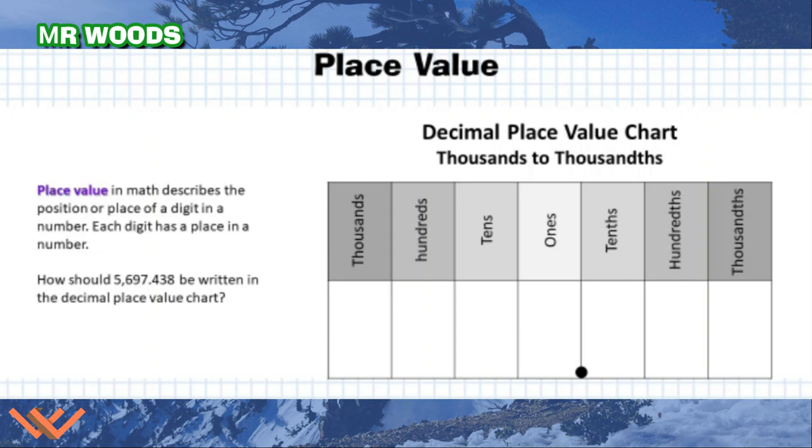Here we have place value. So place value in math describes the position or place of a digit in a number. It says here 5,697.438 thousandths. We plug it into our chart here. So 5, 6, 9, 7. There's that decimal point there and end here. 4, 3, 8. So we have this column compared to this column. This one right here is 10 times larger than this one here. So if I have a 1 here and I put a 1 here, well that is 10 as opposed to 1. So it's 10 times. Here it goes up another 10 times. Same thing when we're going to the right of the decimal point. But we start with tenths and then this is 10 times smaller, which is hundredths. So right here we have ones and tenths are 10 times smaller. Hundredths and thousandths. So we say 5,697.438 thousandths.